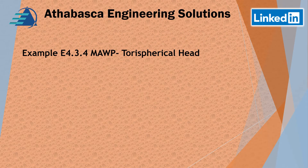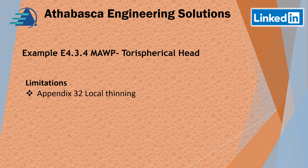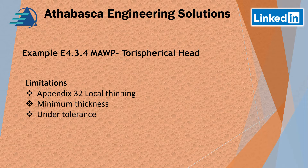The MAWP for the torospherical head — we look at the limitations. If you have Appendix 32, we have local thinning, so we have to be aware of that when doing our head calculations. We also have to be aware of minimum thickness requirements of plates, under-tolerances, and corrosion allowance, just like the previous examples of the heads we've done earlier.